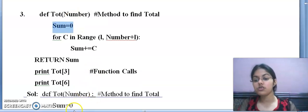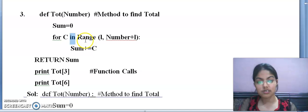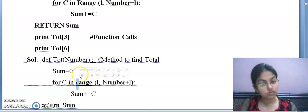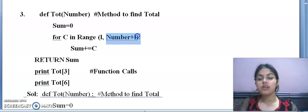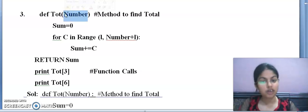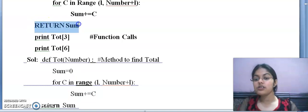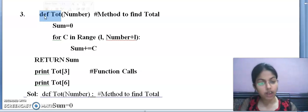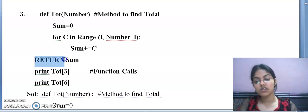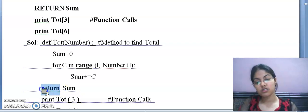Next, sum equals to 0, this is correct. For c in range. This time in is also given, so this is correct. But after that, range's R is given as capital. But range's R will be small. 1 comma number plus 1, this is not an error. The number's value will come from the function. Sum plus equals to c, this is also correct. Return sum. That means this function is returning a value now, that's why return statement is used. But to return the value, this return must be in small letters because this is a keyword.